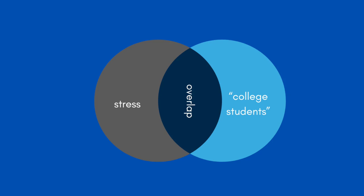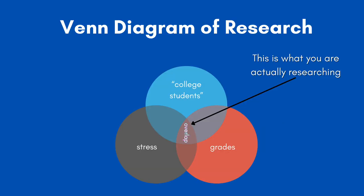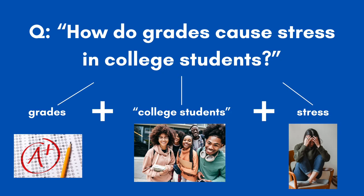However, this overlap is still very large, which is why we get so many results. If we add a third concept, such as grades, we add a third circle and create a smaller overlap. This is why we want research questions without easy answers that have at least three ideas contained within them. Now, our research question has evolved to: how do grades cause stress in college students? We have the ideas of grades, college students, and stress all rolled together, and we find the information where these three ideas overlap or interact. This is what you are actually doing when you conduct research — understanding how different things interact with one another.